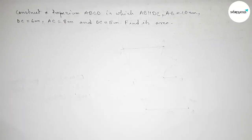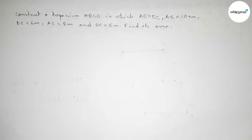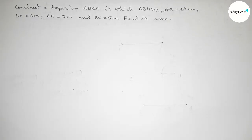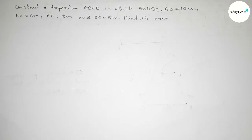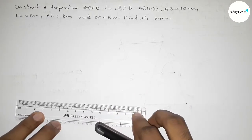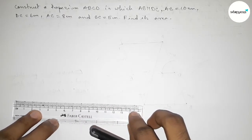Hi everyone, welcome to SI Share Classes. Today in this video we are talking about how to construct a trapezium. We have to construct a trapezium ABCD in which AB is parallel to DC, AB equal to 10 centimeter, DC equal to 6 centimeter, AC equal to 8 centimeter, and BC equal to 5 centimeter. We also have to find its area. So let's start the video.